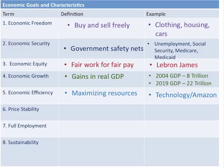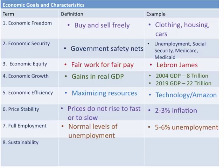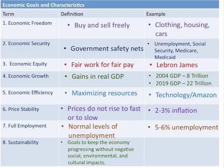Price stability means keeping prices at around 2% to 3% inflation — we don't want wildly high prices or volatile lows, just a normal increase people can anticipate. Full employment means around 5% to 6% normal unemployment levels, so roughly 95% of the economy would be employed. Sustainability means keeping the economy progressing without major damage to the environment, society, or culture, providing opportunities for clean energy, air, and water.